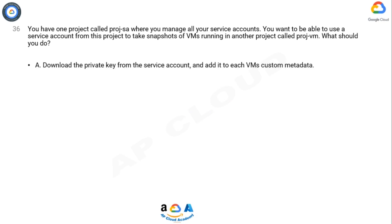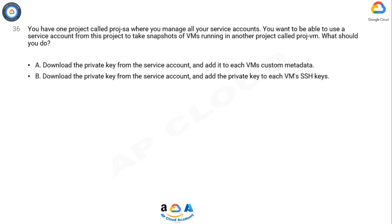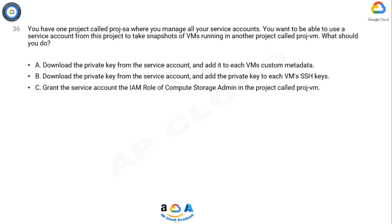A. Download the private key from the service account and add it to each VM's custom metadata. B. Download the private key from the service account and add the private key to each VM's SSH keys.